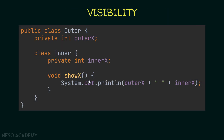Now let's talk about visibility. The outer class is public, so we can use it anywhere. If the inner class has default visibility, we can only access it within the same package. If we try to create an inner object in a class outside that package, we'll get an error even if the outer class is public. We can also use the public visibility modifier, allowing the inner class to be accessed from any other class.